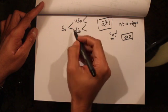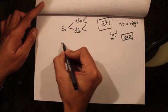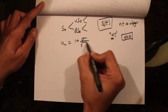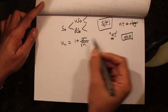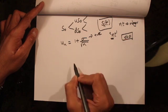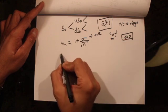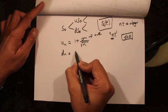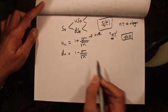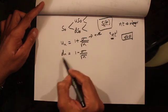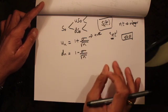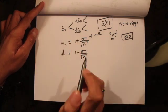We are going to choose an up factor u equal to 1 plus sigma divided by the square root of n, where n is the number of time steps per unit time and sigma is some positive number. The down factor d is chosen to be 1 minus sigma divided by the square root of n.